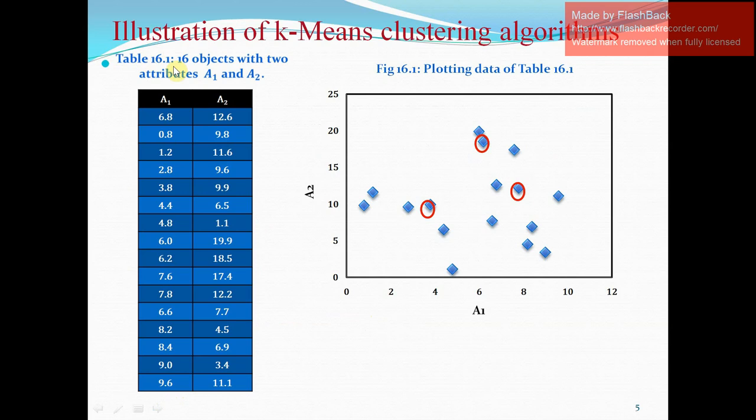Now, in this example, attribute values have been given A1 as A2 for the 16 different data items in set A. Now, they have been plotted in figure 16.1. A1 has been plotted upon X axis and A2 contains Y axis. And through that, those distances will be measured that we will see in the next slide.